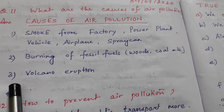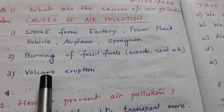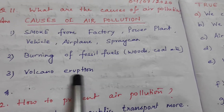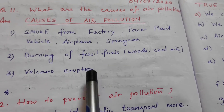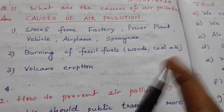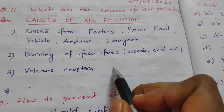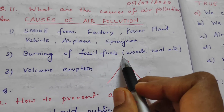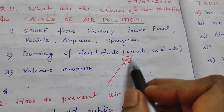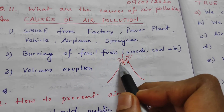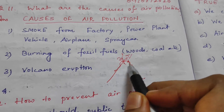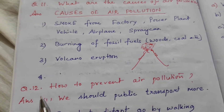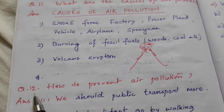Number 3 main point that causes air pollution is volcanic eruption. This is a volcano, and some smoke is coming out. So that smoke also causes air pollution.